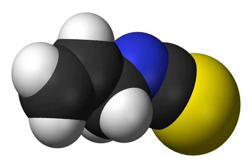Allyl isothiocyanate, AITC, is the organosulfur compound with the formula CH2CHCH2NCS.